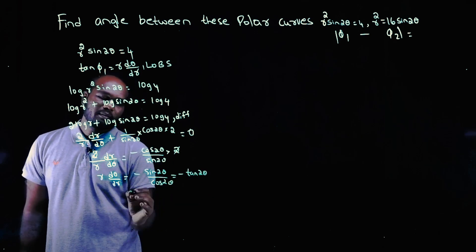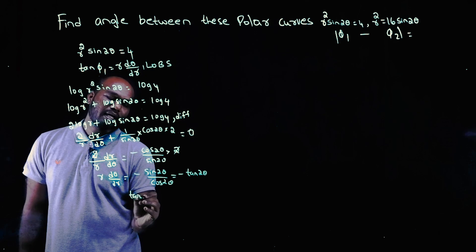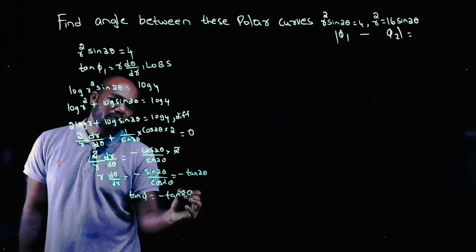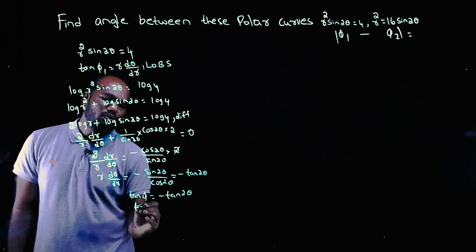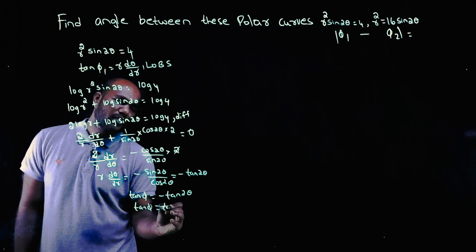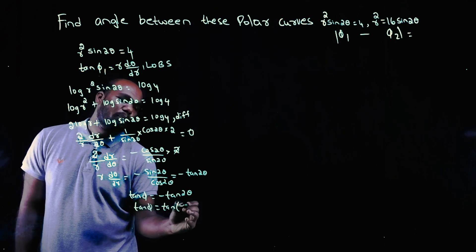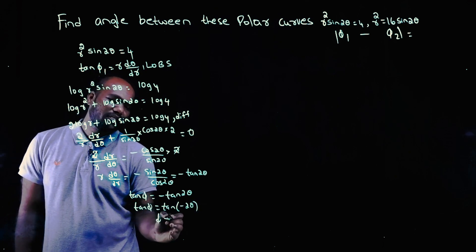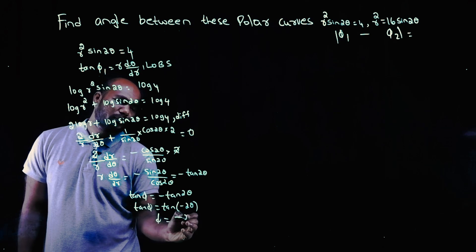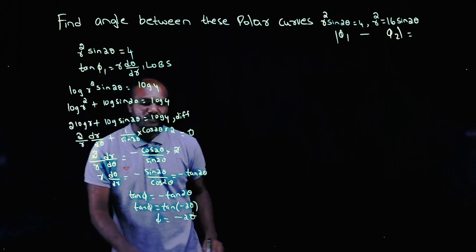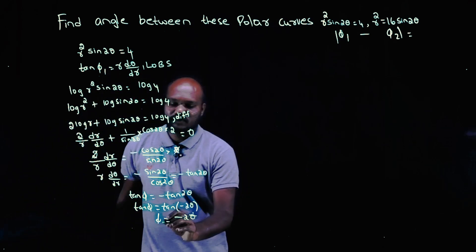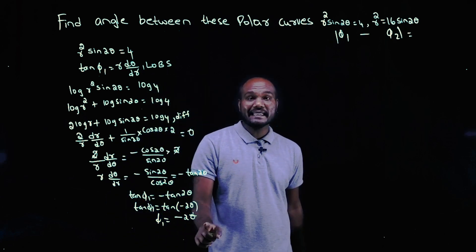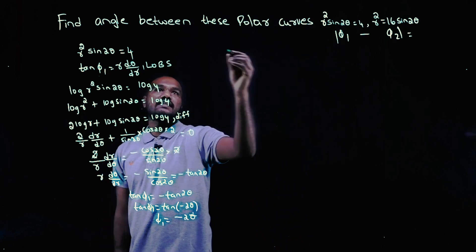So tan φ1 = -tan2θ, which can be written as tan(-2θ). Since tan cancels, φ1 = -2θ. This is our φ1.